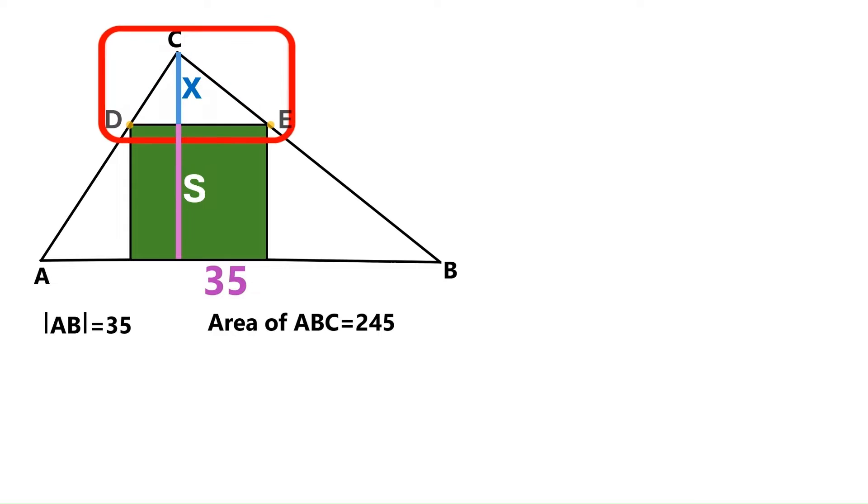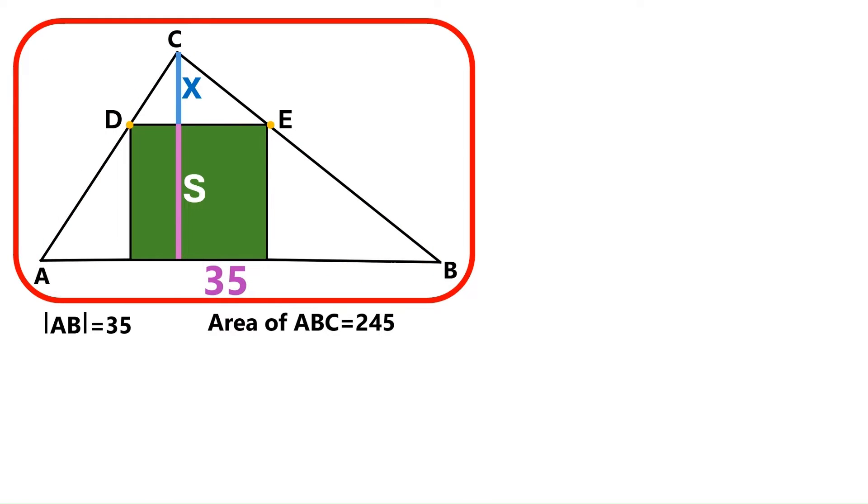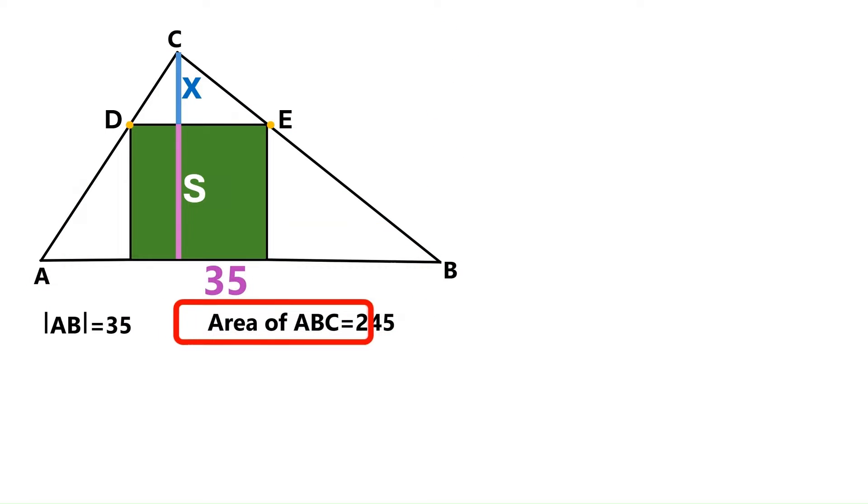X is the height of this small triangle CDE that you see over here. If we join X and S, we get the height of this big triangle ABC. And that's great because we know the area and the base of ABC, and we can use them to get its height.